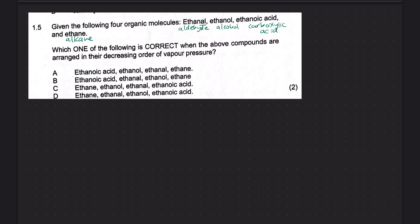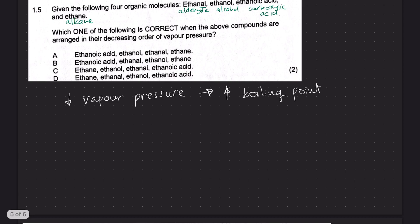So remember, decreasing vapor pressure means the same thing as increasing boiling point. So we need to know the intermolecular forces here. So we know that all of them will have intermolecular forces. We just have to now recall what are the intermolecular forces that's going to be present. So an alkane will have London, which is the weakest. And so it will have the lowest boiling point.